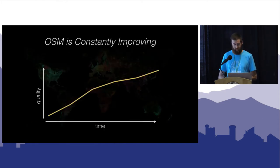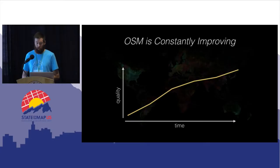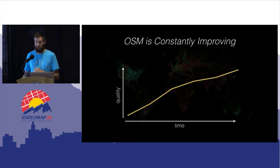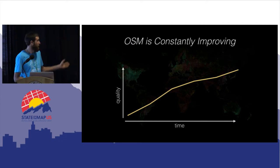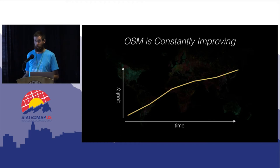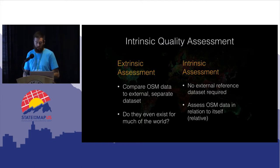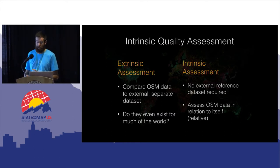Quality assessment is complicated. What's special about OSM however is that it's not a single static geospatial dataset — it's constantly evolving and growing. With time comes improvement in quality at a large scale. This is especially interesting with OSM data because it's kind of the opposite of some other geospatial datasets that with time grow old and stale. So we're performing an intrinsic quality analysis of OSM data with respect to growth over time, assessing OSM data in relation to itself.